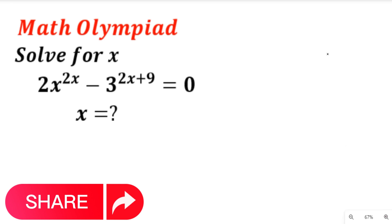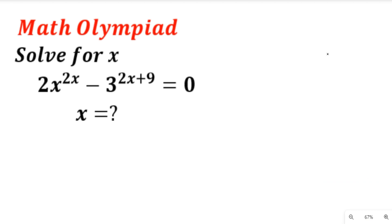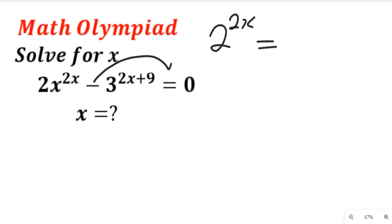To solve this question, we are going to take the 3 to the power of 2x plus 9 to form the right hand side of the equation. If we do that, this will give us 2 to the power of 2x on the left, equal to 3 to the power of 2x plus 9 on the right.